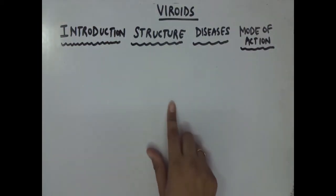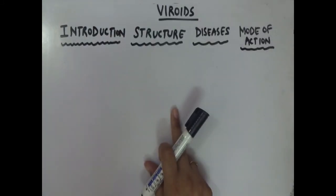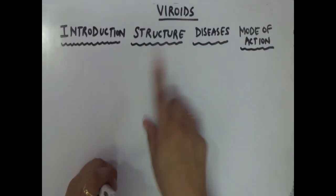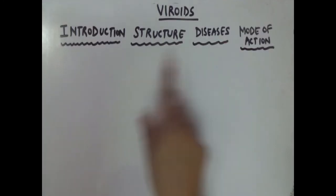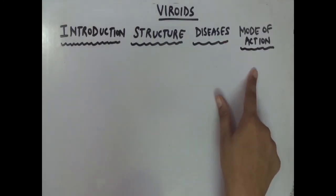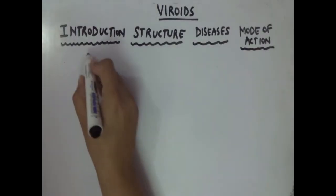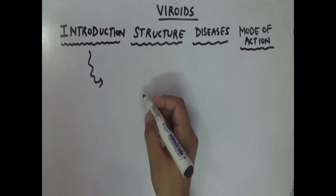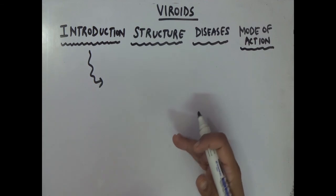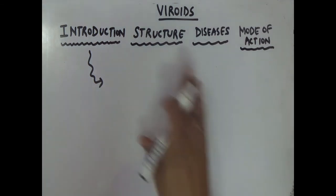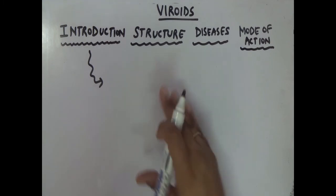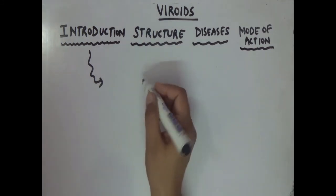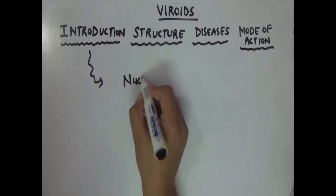Hello everyone, today we will talk about the topic viroids. In last class we covered prions, and now we are taking viroids. This topic we will understand in four headings: introduction, structure, diseases, and mode of action. Remember, viroids — like prions — are given under the virology section and have resemblance to viruses.